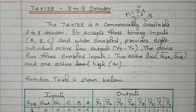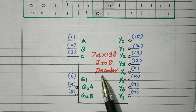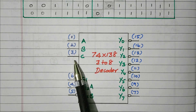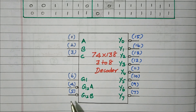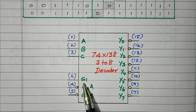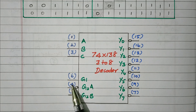Now we will see the pin diagram. This is the pin diagram of the 74X138 IC 3-to-8 decoder. There are 3 inputs A, B, C with pin numbers 1, 2, 3. There are 3 enable inputs at pin numbers 4, 5, and 6. Pin numbers 4 and 5 have active-low enable inputs G2A bar and G2B bar. Pin number 6 is the active-high enable input G1. G1 is connected at pin number 6; G2A and G2B are connected at pins 4 and 5.